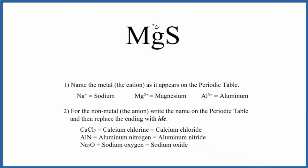And specifically, this is a binary ionic compound because we just have two different elements here. So when we have a binary ionic compound, we can use these rules to write the name.